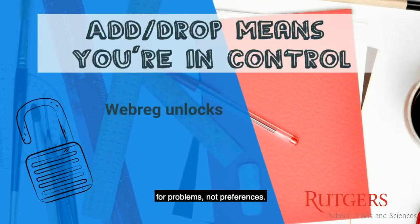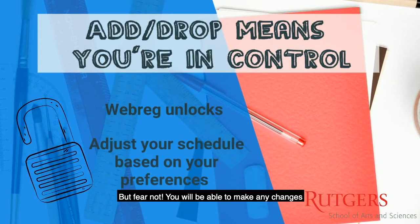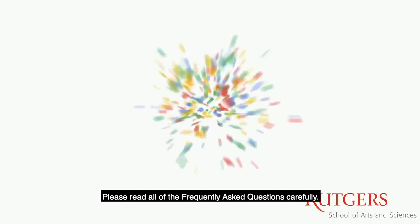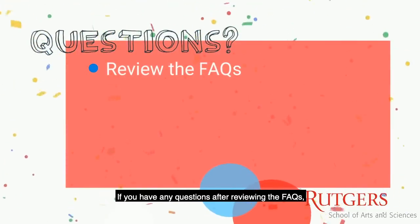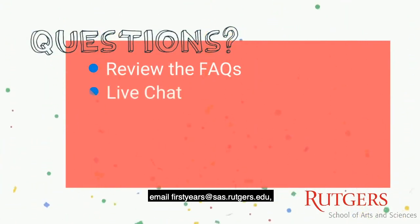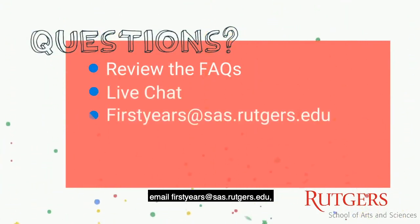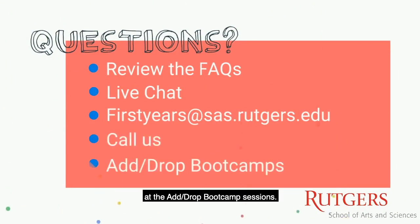At this time, most changes will need to wait until add/drop because we can only make adjustments for problems, not preferences. But fear not — you will be able to make any changes you wish to your schedule in just a few short days. Please read all of the frequently asked questions carefully. If you have any questions after reviewing the FAQs, we invite you to use live chat, email firstyears@sis.records.edu, call us, or talk to us and the SIS peer influencers at the add/drop boot camp sessions. We hope that you are as excited to start the fall as we are.